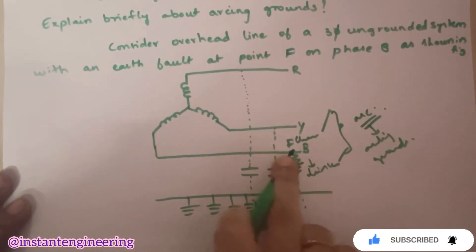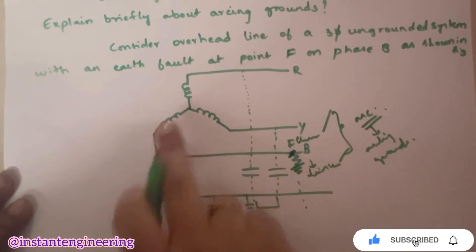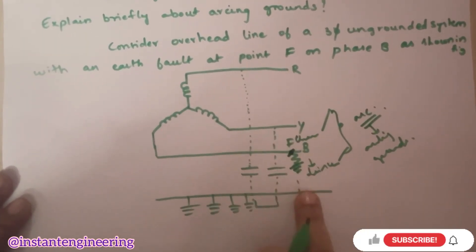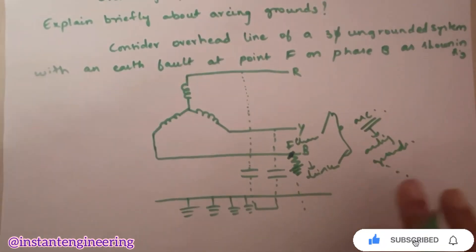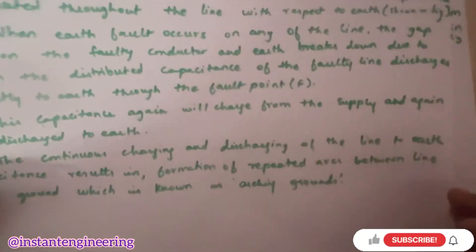Understood? The current over here will be going to the ground. Again, it will charge. It is charging. It is discharging. This is called as arcing grounds. I hope this is clear. I just read through once again. I hope you will understand that.